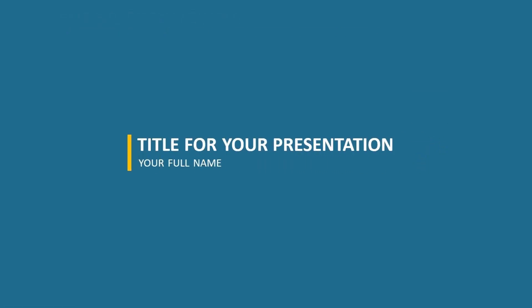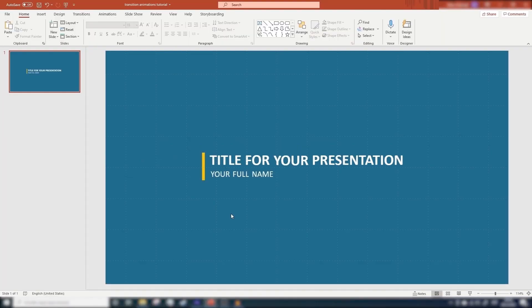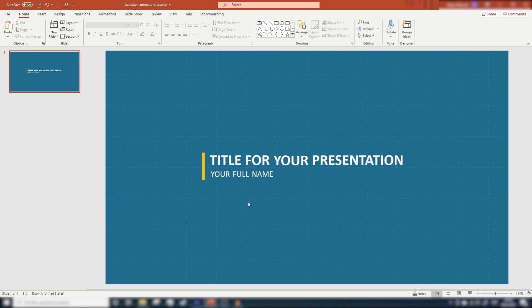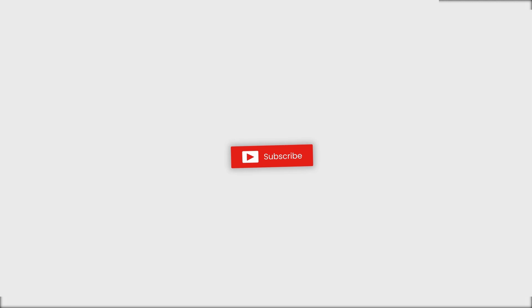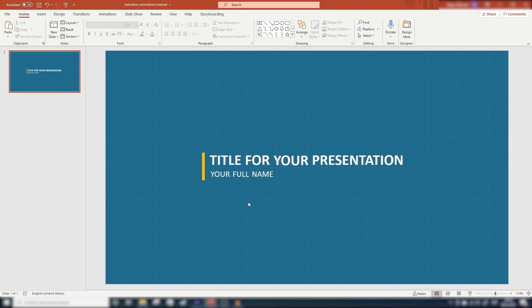The best way to understand how this works is by actually doing it, so let's go back to PowerPoint and we're gonna do this together step by step. First, make sure each word in your title and subtitle has its own text box, as this is very important for our animation to work properly. If you have found this content useful, don't forget to subscribe to this channel and hit that bell icon so you get a notification every time I submit a new video. So let's continue — we will be using the slide we made on the previous video, so here we are.